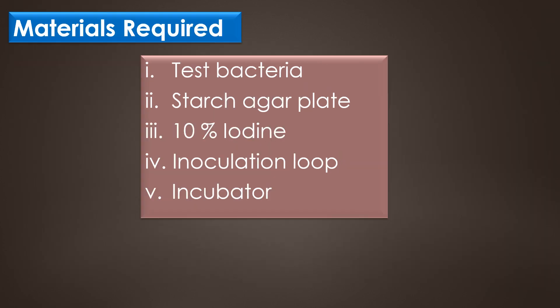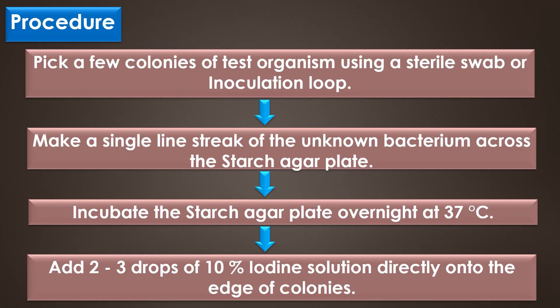The materials required for the starch hydrolysis test are: test bacteria, starch agar plate, 10% iodine, inoculation loop, and incubator. For the procedure, pick a few colonies of test organisms using a sterile swab or inoculation loop and make a single line streak of the unknown bacterium across the starch agar plate. Incubate the inoculated plate overnight at 37 degrees Celsius. After incubation, add 2 to 3 drops of 10% iodine solution directly onto the edge of the colonies, wait 10 to 15 minutes, and record the results.